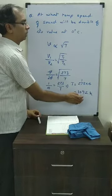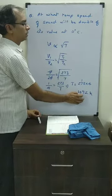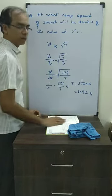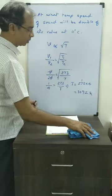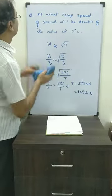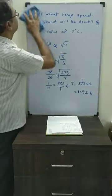If the answer is required in degrees centigrade, subtract 273 from 1092 Kelvin. Let us see another question.